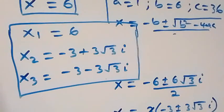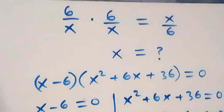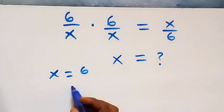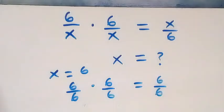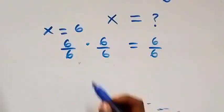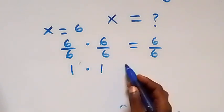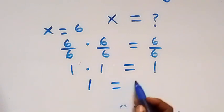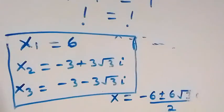Now we verify by substituting x equals 6 into the original equation. We get 6/6 times 6/6 equals 6/6. Since 6/6 equals 1, the left-hand side is 1 times 1 equals 1, and the right-hand side is also 1. Left-hand side equals right-hand side, so x equals 6 satisfies the given equation. The complex solutions also satisfy it when checked.